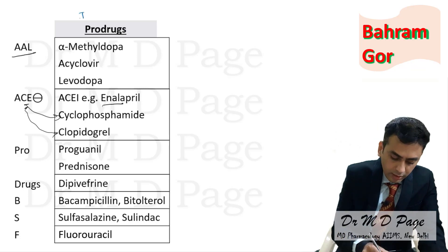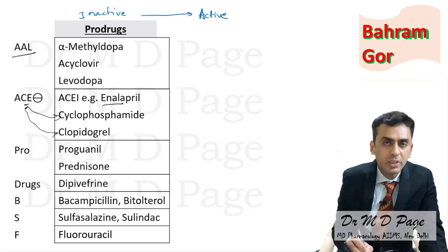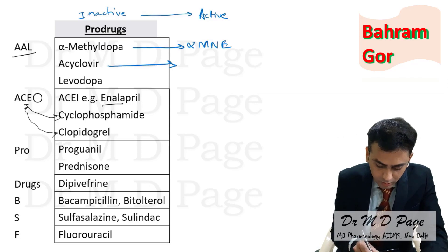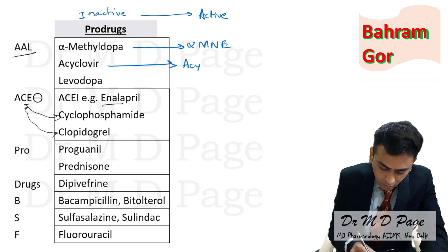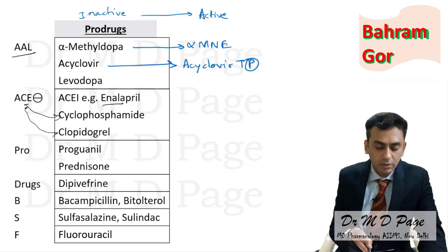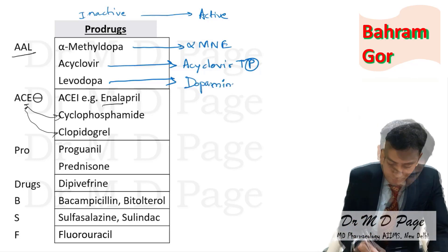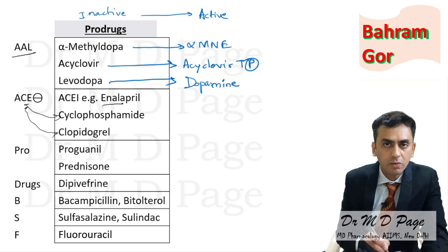In the definition of pro-drugs, these drugs are inactive and their metabolite is active. Alpha methyl dopa is inactive; its metabolite is alpha methyl norepinephrine. Acyclovir is inactive; after biotransformation in the liver it produces acyclovir triphosphate, which is the active metabolite. Levodopa gets converted in the body into dopamine. ACE inhibitors: enalapril gets converted to enalaprilat, fosinopril to fosinoprilat.